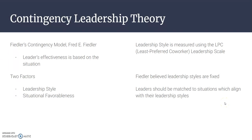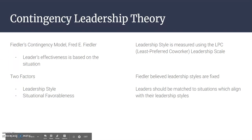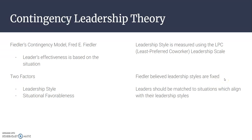Fiedler was one of the first to develop the contingency leadership theory, back in the 1950s. He believed that a leader's effectiveness is based on the situation. There are two factors to consider: leadership style and situational favorableness. According to Fiedler, the two leadership styles are task-oriented and relationship-oriented, measured by the LPC — the Least Preferred Co-Worker leadership scale. He believed leadership styles are fixed and nearly impossible to adjust, and that a leader is most effective when matched with situations that align best with their style.